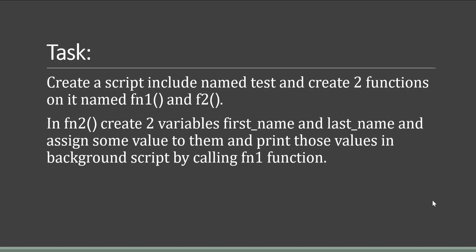Let me summarize: we have to create one Script Include whose name will be 'test', and we have to create two functions named fn1 and fn2. In fn2, I have to create two variables — first_name and last_name — assign some string values to them, then call this Script Include in the background script, call fn1, and print the values of first_name and last_name which are in fn2. Let's go to the instance and complete this task.